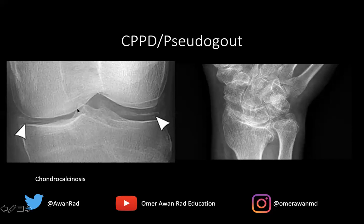Typically you're going to get degenerative-type changes — joint space loss, subchondrosclerosis, cystic change, osteophytes. There may be some erosive element to it too, but more commonly you get degenerative-type changes. This is what it would look like in the wrist — again, you have this chondrocalcinosis here in the TFCC.